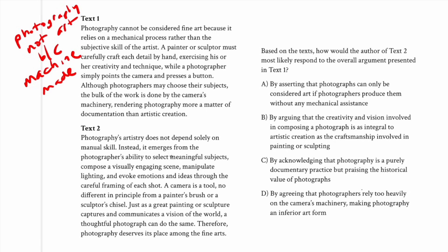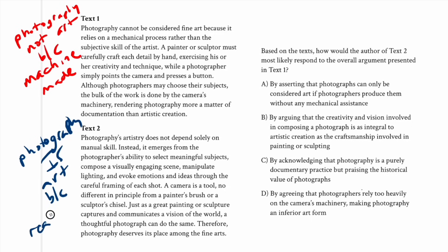How would the author of passage two respond? It says photography's artistry does not depend solely on manual skill — acknowledging that manual skill isn't really the point — but instead it emerges from the photographer's ability to select meaningful subjects, compose a visually engaging scene, manipulate lighting, and evoke emotions. A camera is a tool no different in principle from a painter's brush or a sculptor's chisel. Therefore photography deserves its place among the fine arts. So: photography is art, for reasons — it doesn't depend on manual skill doesn't mean it's not art.